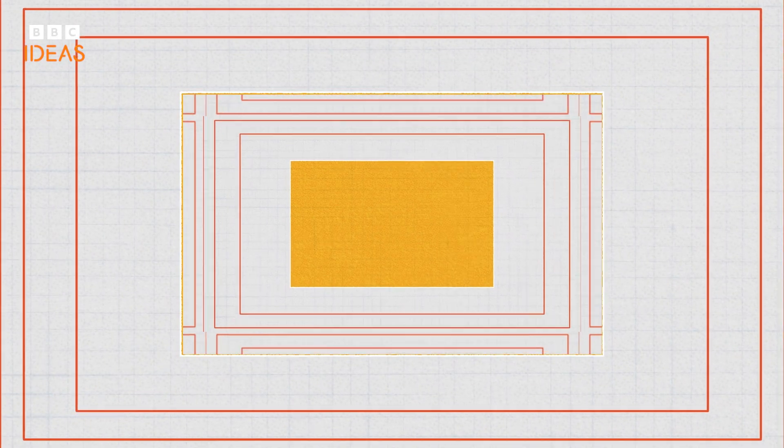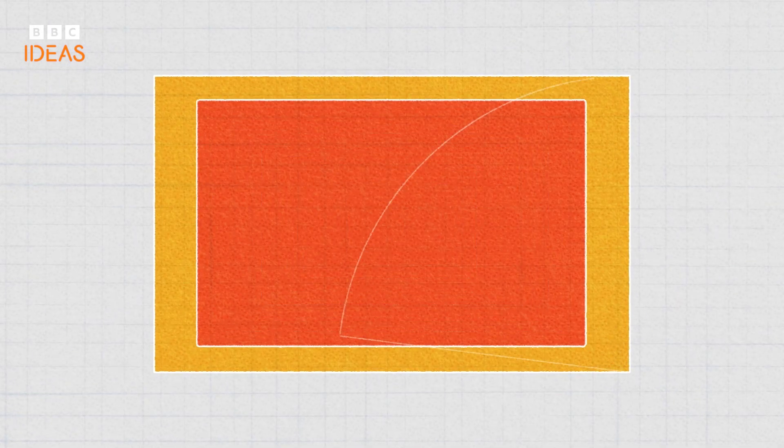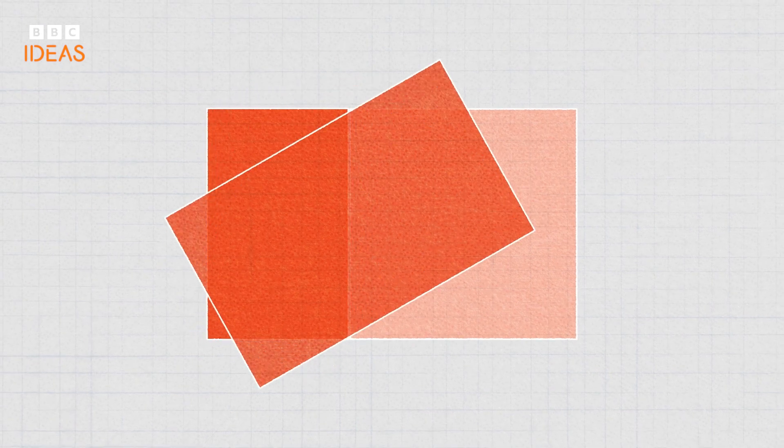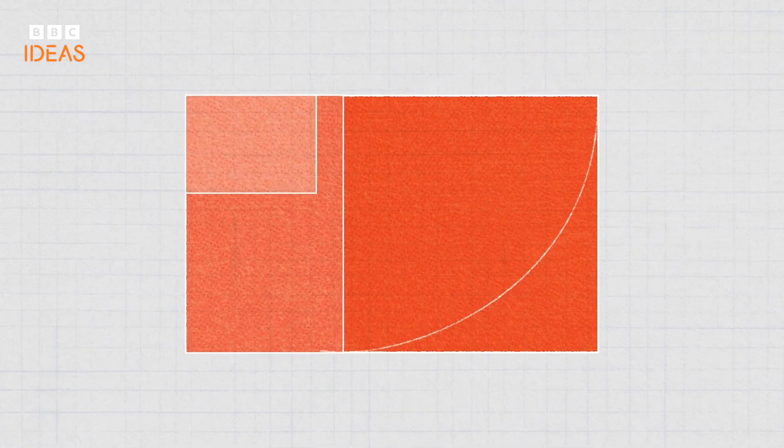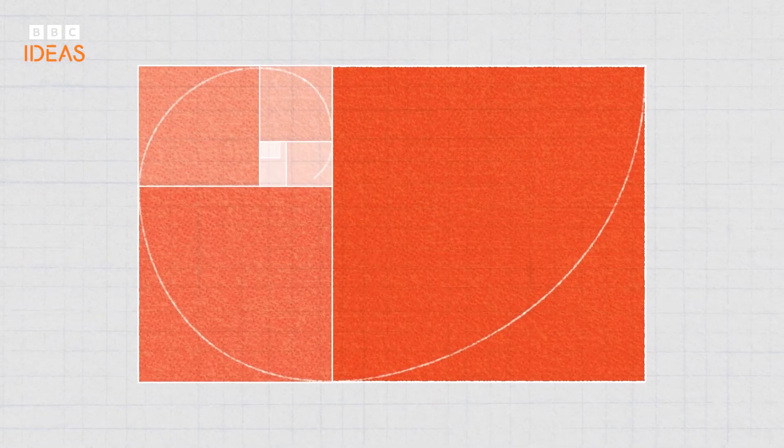The approximate ratio of the height to the width is called the golden ratio or the golden section. The extraordinary thing about this rectangle is that if you cut off a perfect square, you're left with a smaller rectangle of exactly the same proportions. Now watch what happens when we start cutting out smaller and smaller squares.